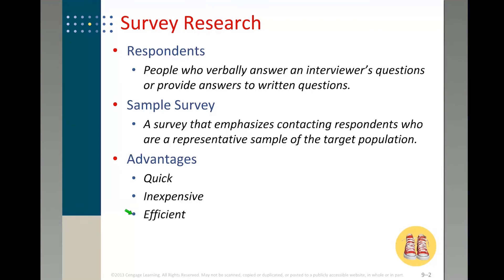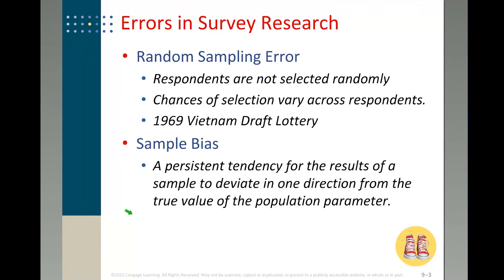Survey is efficient in the sense that you can have data collected quickly and with less cost. But certainly it depends on how you conduct it — if conducted well it's effective. However, there are a lot of situations where people may make mistakes in conducting surveys. Some mistakes can be avoided, some cannot. The first one is called random sampling error.